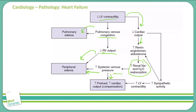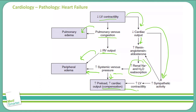Increasing preload on the right side of the heart will in turn increase cardiac output, and that is what is known as cardiac compensation — the body compensating for low blood flow by increasing blood flow back to the heart. Additionally, due to that decrease in cardiac output, we see an increase in sympathetic activity, which will increase left ventricular contractility and further increase cardiac output, furthering compensation for the initial decrease in left ventricular contractility.